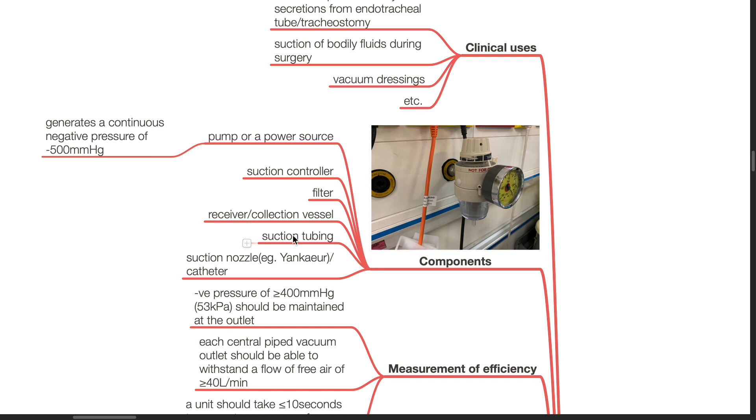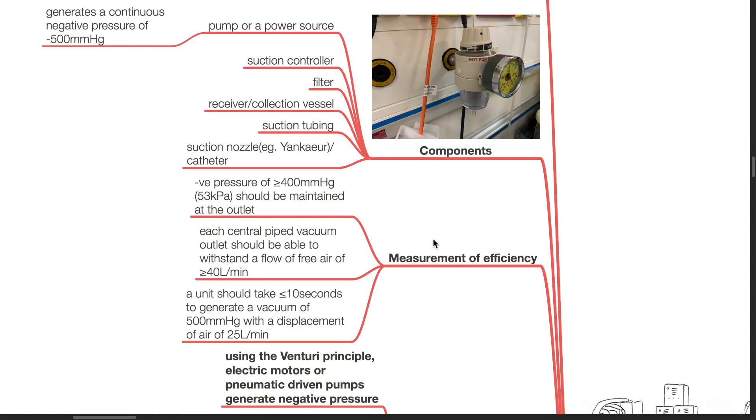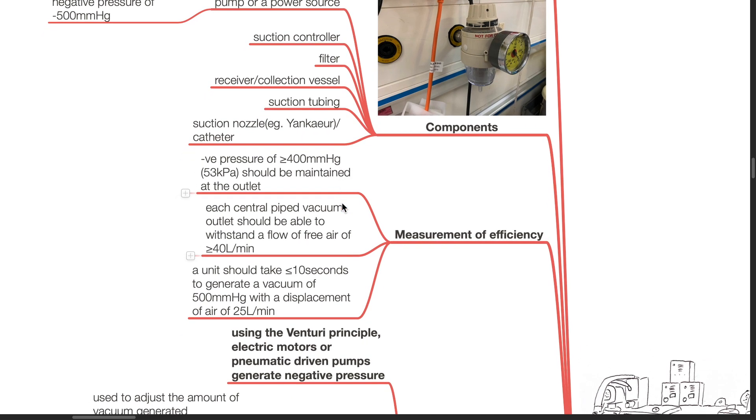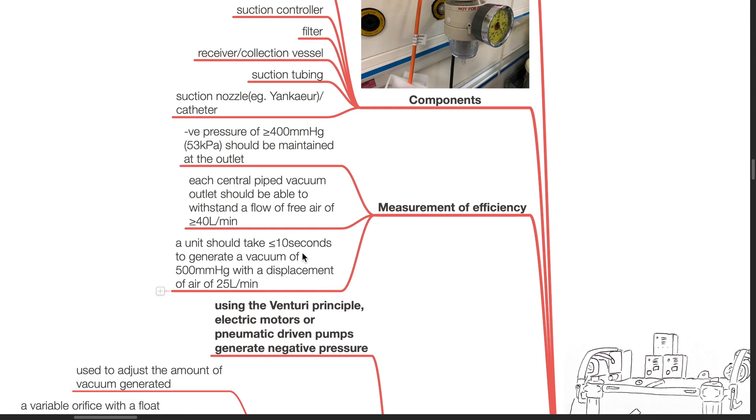Measurement of efficiency: Negative pressure of 400 mmHg or more should be maintained at the outlet. Each central pipe vacuum outlet should be able to withstand a flow of free air of 40 liters per minute or more. A unit should take 10 or less seconds to generate a vacuum of 500 mmHg with a displacement of air of 25 liters per minute.